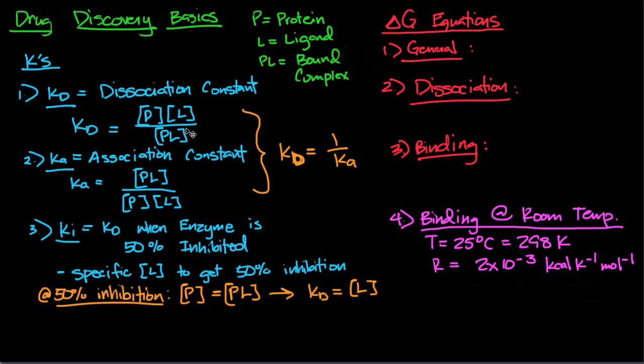Now what does this mean conceptually? The higher your Ki is means you need more ligand to get 50% inhibition. If you need more ligand to get 50% inhibition, that means you have worse binding. A higher Ki value means worse binding, and the worse binding you are, the less potent your drug will be, or the less potent or less efficient your drug tends to be.